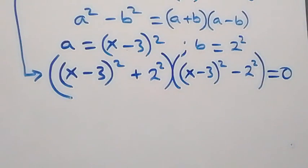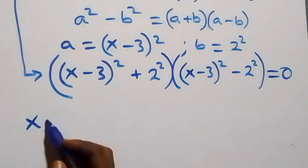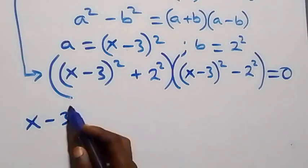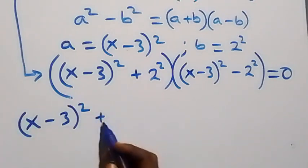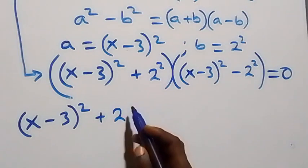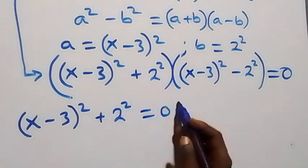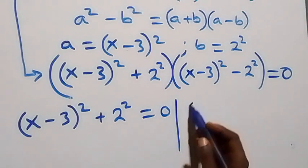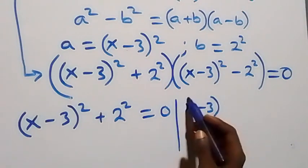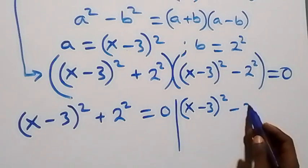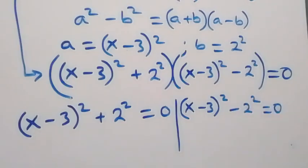We now have two possible cases. Case one: (x minus 3) squared plus 2 squared equals 0. Case two: (x minus 3) squared minus 2 squared equals 0.